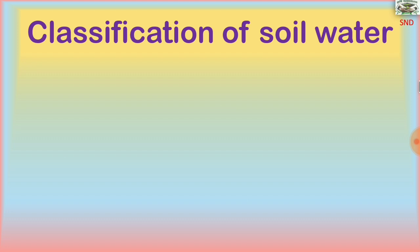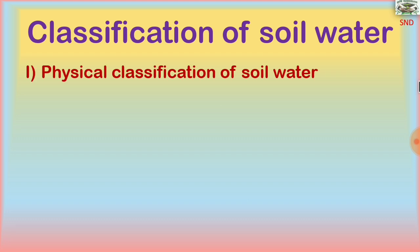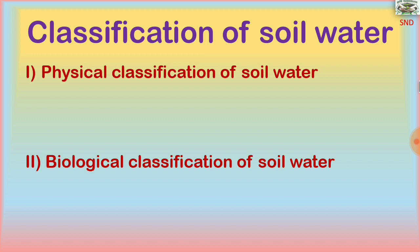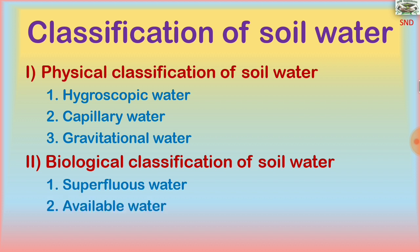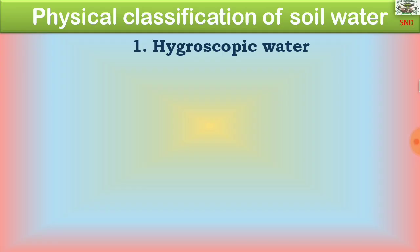Now we come to the main topic: the classification of soil water. It is classified as physical and biological. Under physical classification, we have hygroscopic water, capillary water, and gravitational water — relating to the innate character of water present in the soil. Under biological classification, we have superfluous water, available water, and unavailable water, based on availability to the plant.